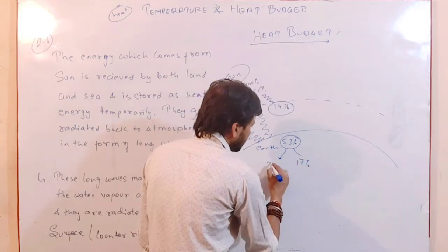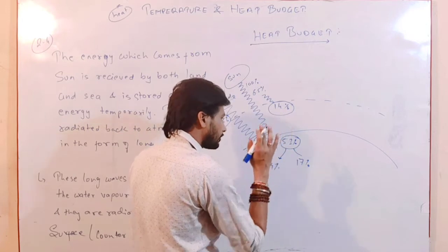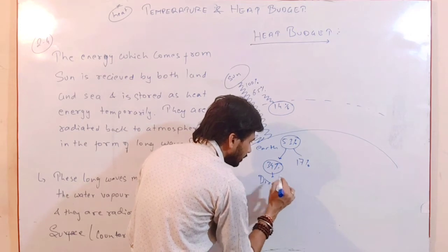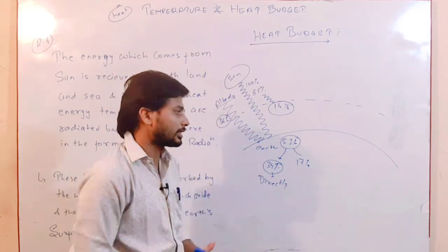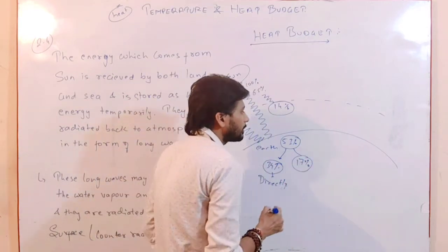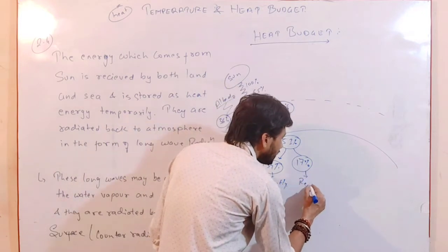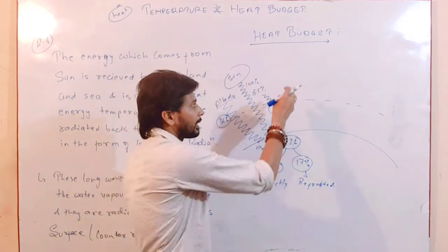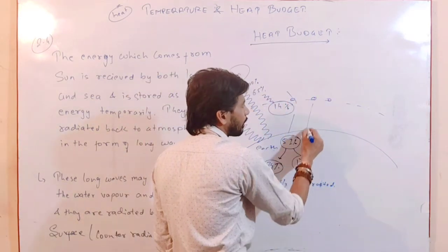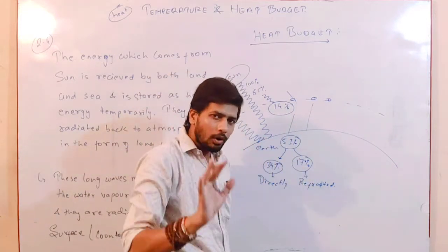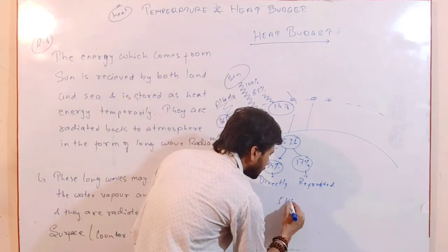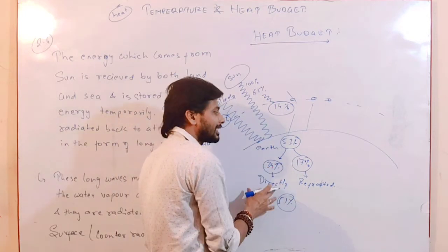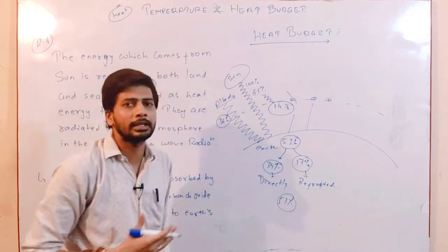Out of the 51% that reaches Earth's surface, it splits into two parts: 34% comes directly to the Earth without any interference, and 17% comes reflected by particles present in the atmosphere. So in total, 51% reaches the Earth's surface — 34% direct and 17% reflected by atmospheric particles.